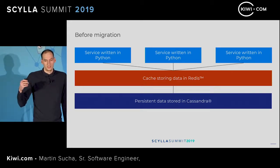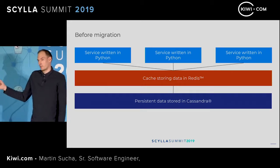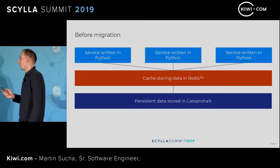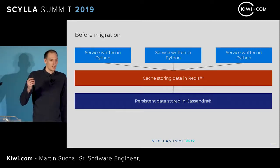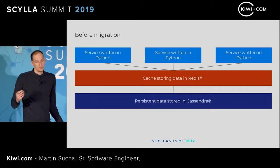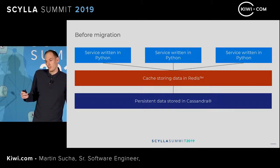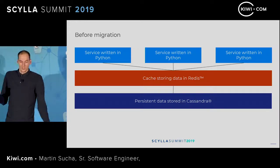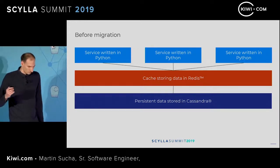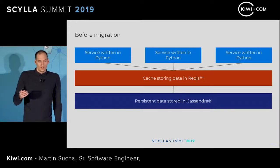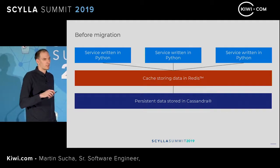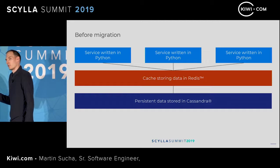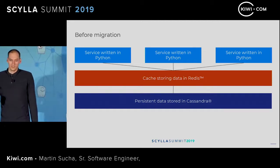This Cassandra cluster was accessed by multiple services written in Python, but we also required a separate caching layer because Cassandra couldn't keep up. We decided to move from Cassandra to Scylla, and if you are interested in the details of those early phases of the migration, you can watch videos of talks from last year.